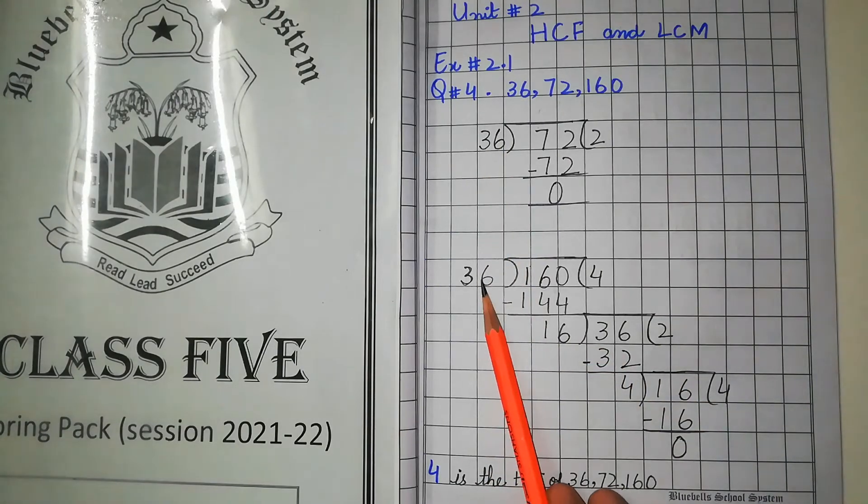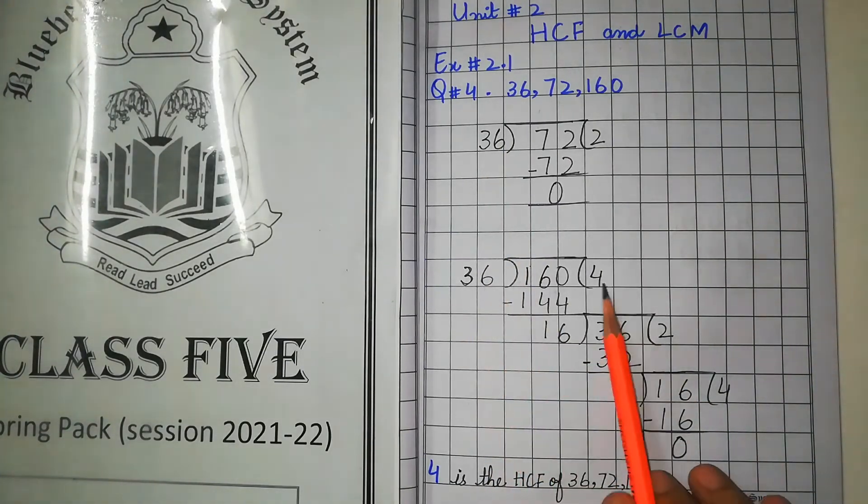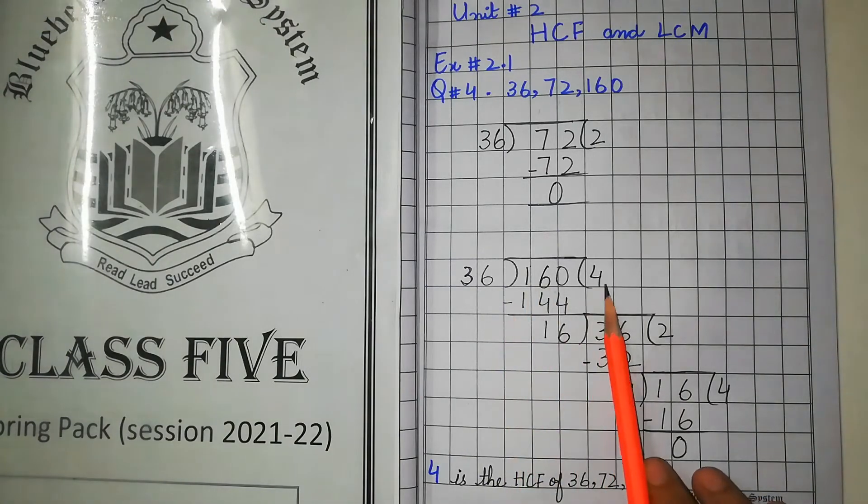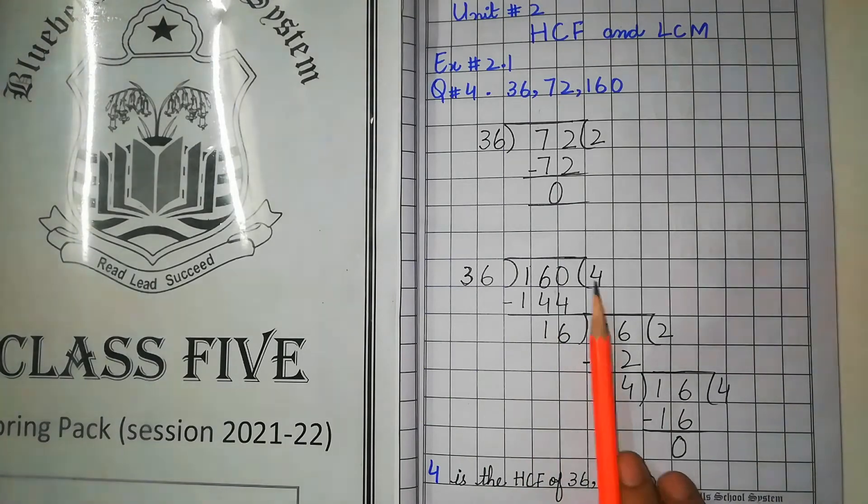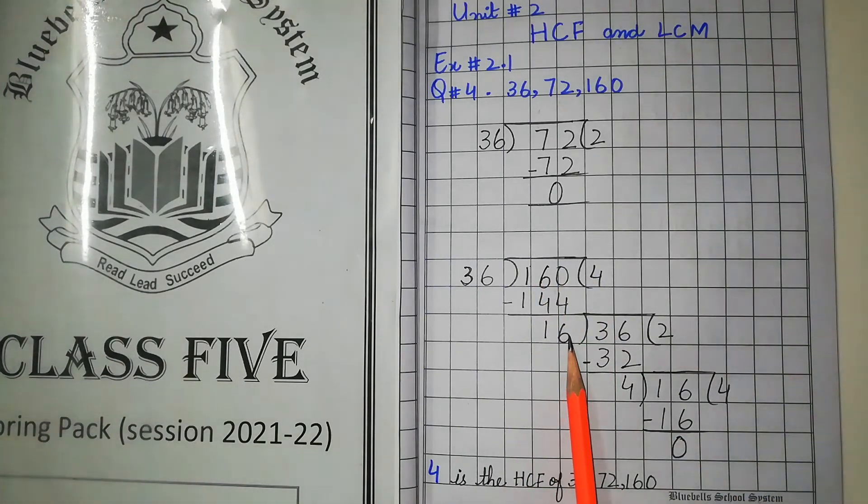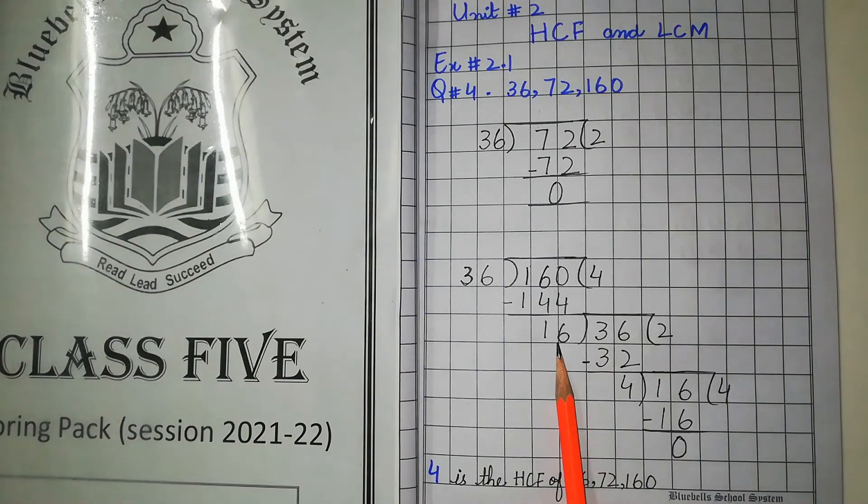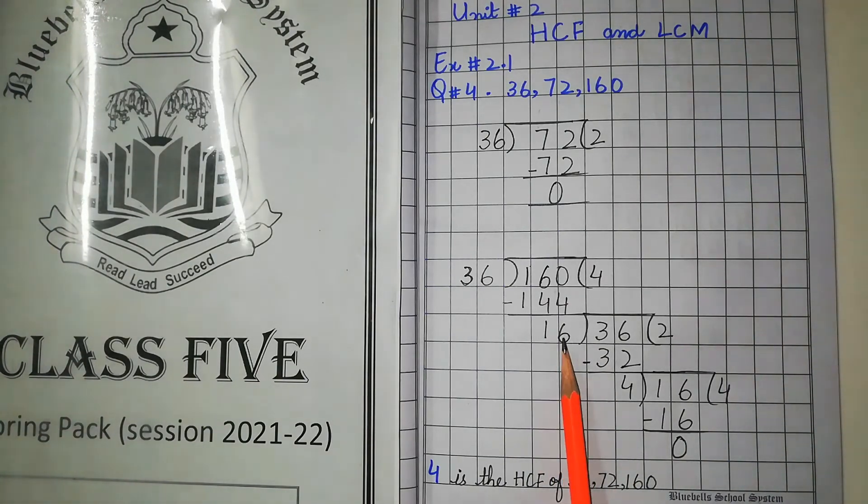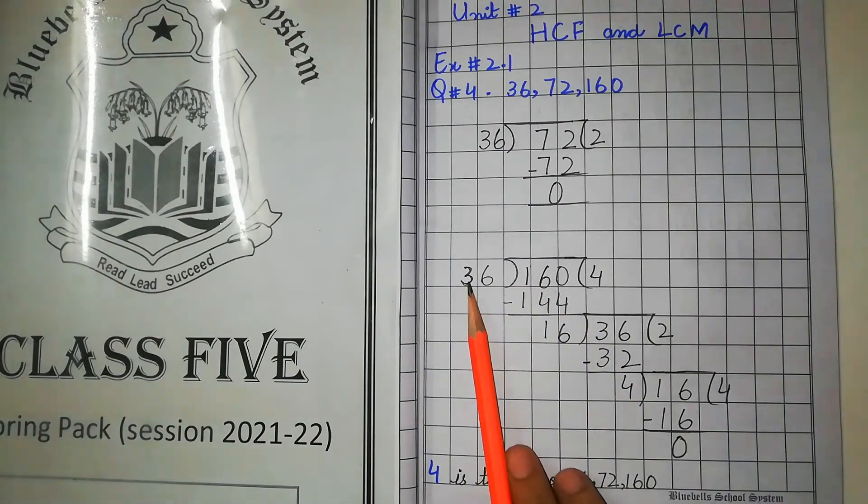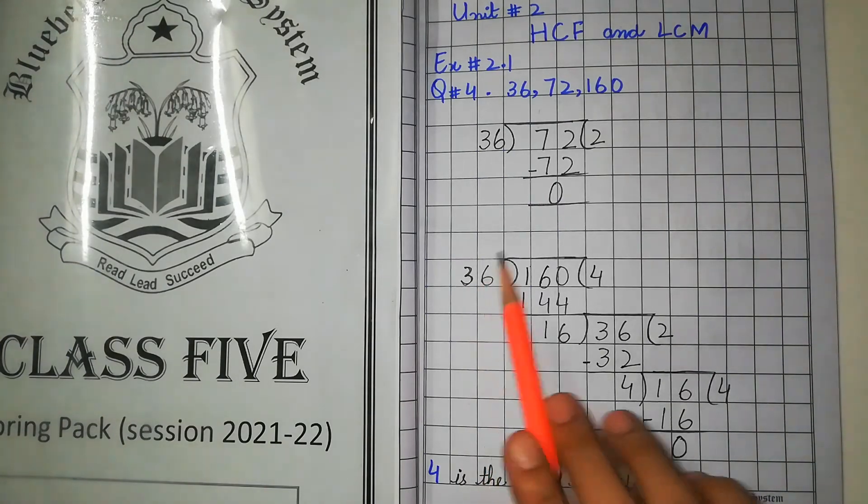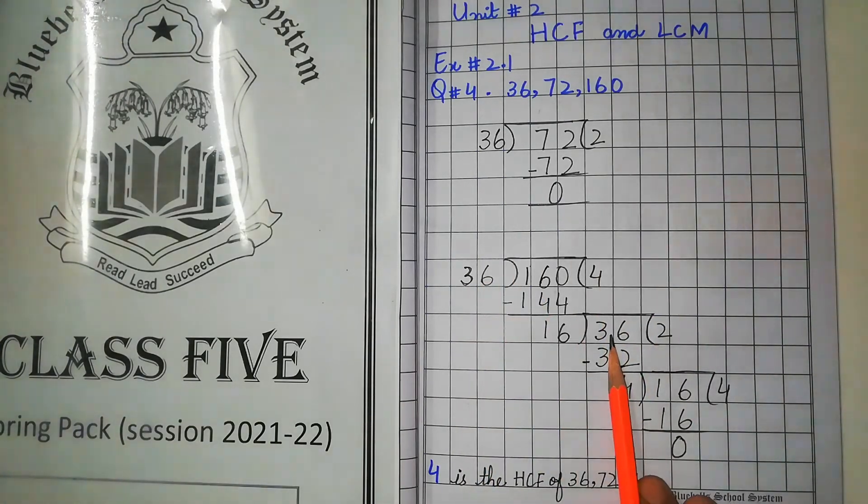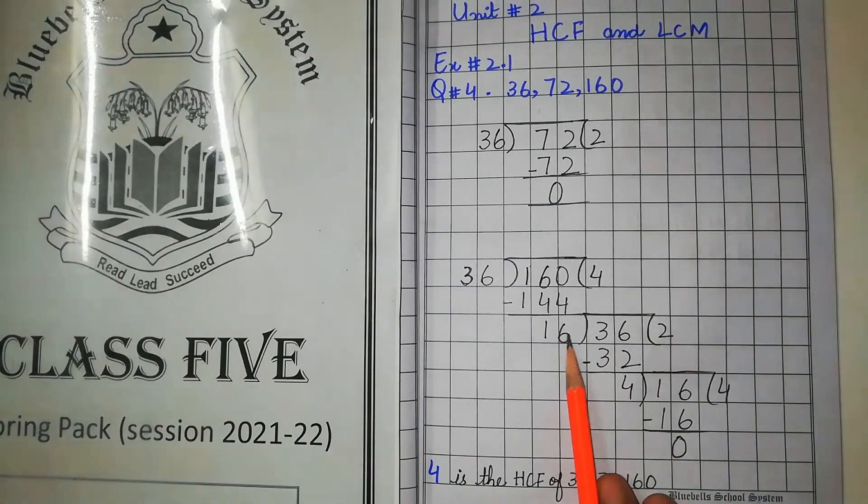We will use it as a divisor with 36. We will multiply it with 36. Divisor here is 36 and we will write it in the way of dividing and then we will divide it.